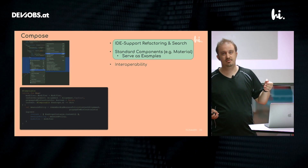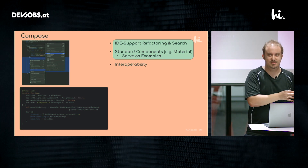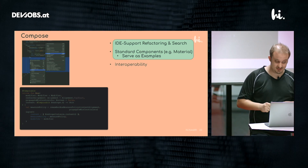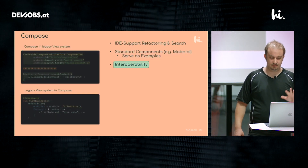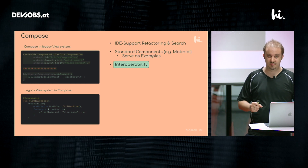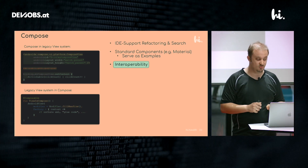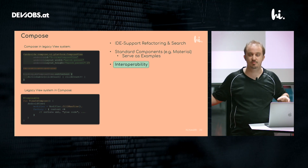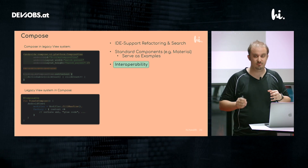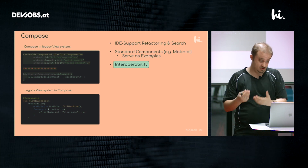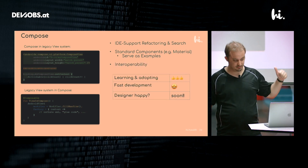There are already a lot of standard components — for example, the whole Material library — that really serve as examples. They're not 30,000 lines of code; they're written in Compose themselves, so it's a nice example to look at. The last thing really needed is interoperability, and it exists. In your XML legacy system you can add one widget called ComposeView where you start composing your functions. And if you want to reuse components from your legacy system in the new one, you can have one Compose function that internally inflates your XML.